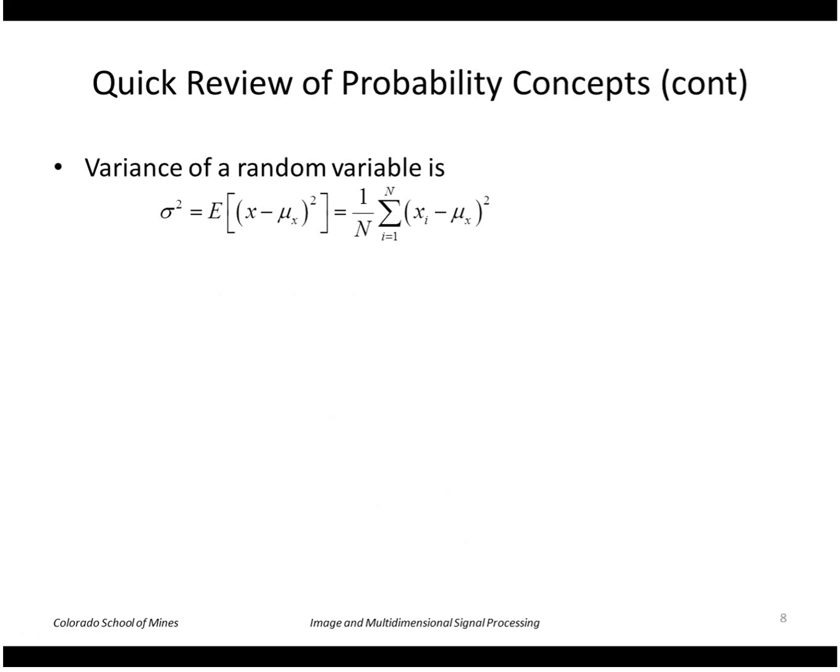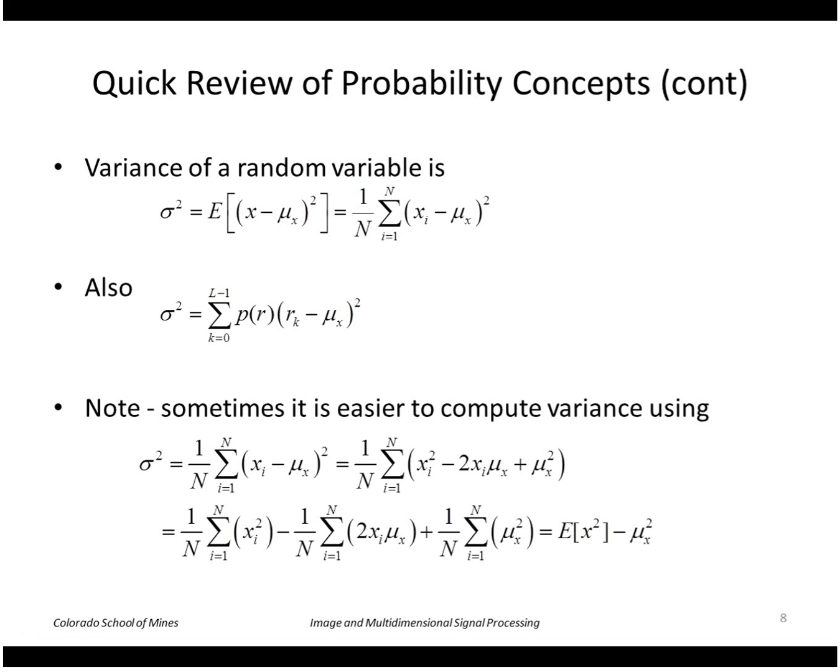Similarly, we've got the idea of variance, which is the expected value of the values minus the mean squared. We can express that in terms of summing over the possible values of the probability of having that value times r minus mu squared. Sometimes, especially in image computations, it's easier to compute the variance using this expression: the expected value of x squared minus the mean squared.